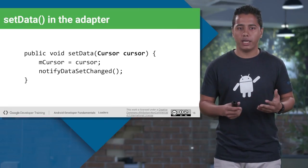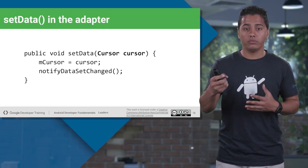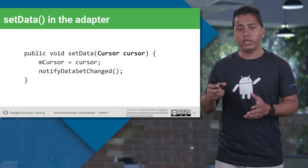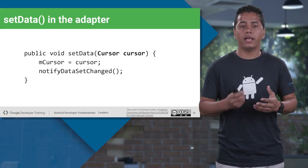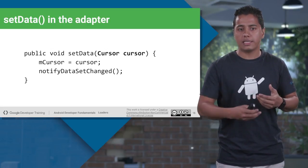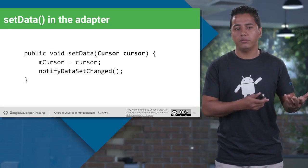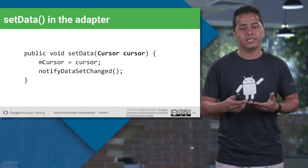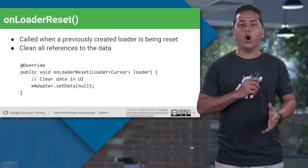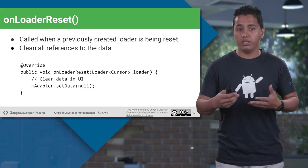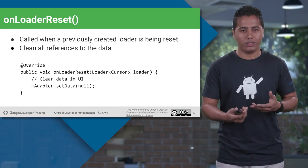If you are setting data to an Adapter, you will get a CursorObject, take the data out using getString or by giving a column name, and once you set it into your Adapter, ListView, or RecyclerView, you have to notify that data has been changed by calling NotifyDataSetChanged. OnLoaderReset is used to reset all the values or references you have initialized before back to null, so it's starting from square one again.